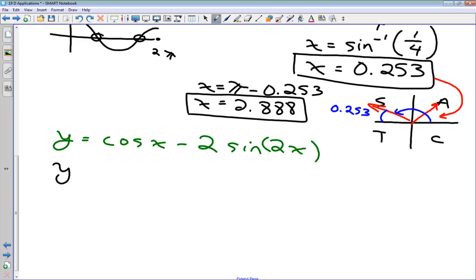So y equals cos x minus 2 sine 2x from there. And now I'm going to take my derivative of cos x. Oh, I'm sorry, and that was my first derivative, right? So now I'm going to take my second derivative here. So derivative of cos x is negative sine x. I'm going to have 2 times the derivative of sine 2x, which is a composite function. So it's going to be derivative of sine is cos 2x, and then I have to multiply it by 2 again. So my second derivative is going to be negative sine x minus 4 cos 2x.